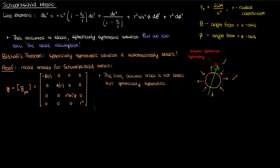If that's the case, we'll modify our ansatz and change B and A as functions of just the radial coordinate to functions of now both the radial coordinate and the time coordinate t. But why didn't we do anything else to the ansatz when relaxing the static restriction?